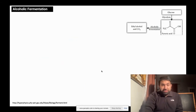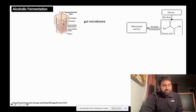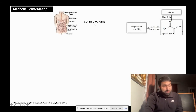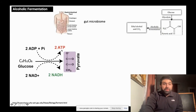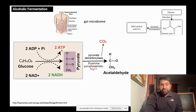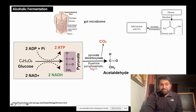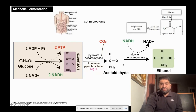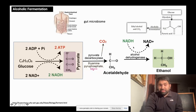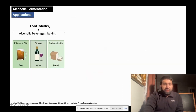In alcoholic fermentation, as the name suggests, the standard product is alcohol. This phenomenon has been well researched in the animal gut, where gut microbiome ferments complex organic molecules to alcohol. The first step is glycolysis, as mentioned before. At the end of glycolysis, pyruvate is decarboxylated to acetaldehyde, and finally it is converted into ethanol. NADH, which was reduced during glycolysis, is regenerated in this final step.